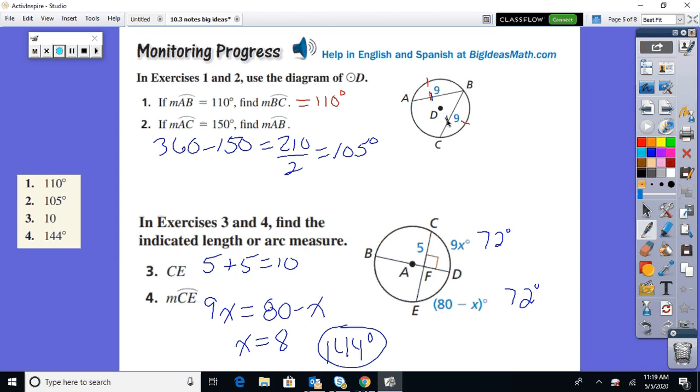Now, in the second one, it's a little trickier. They're telling you that AC, the arc, is 150. So this goes back to the last section. So I know I got 150 from there to there. Then the remainder of the circle has to be 360 minus 150, which is 210. And the arcs are the same. So divide it by 2, and you would get 105 and 105. And these questions are independent of each other.